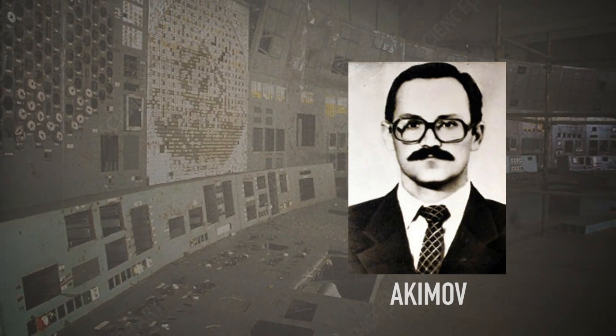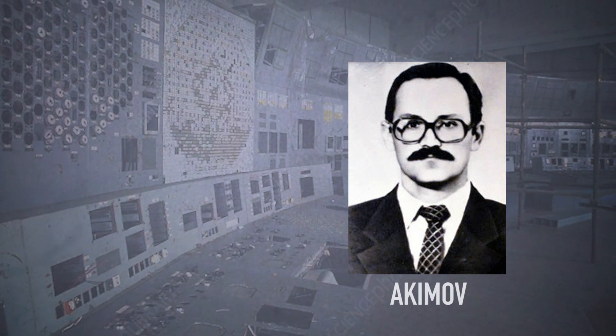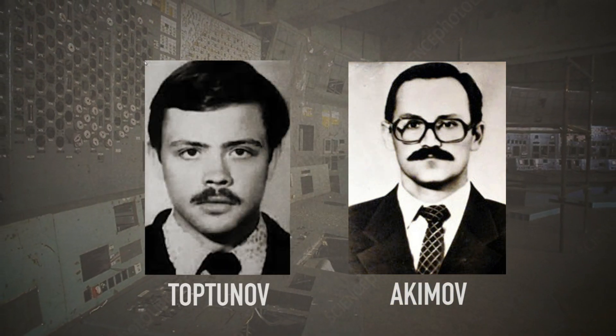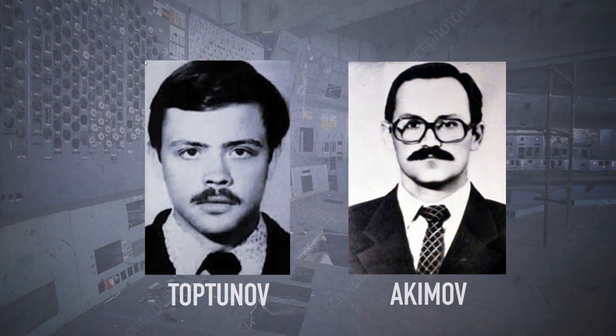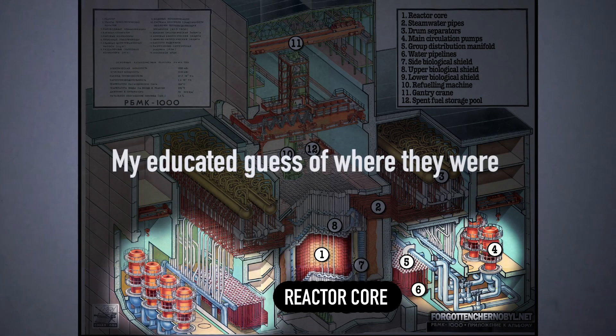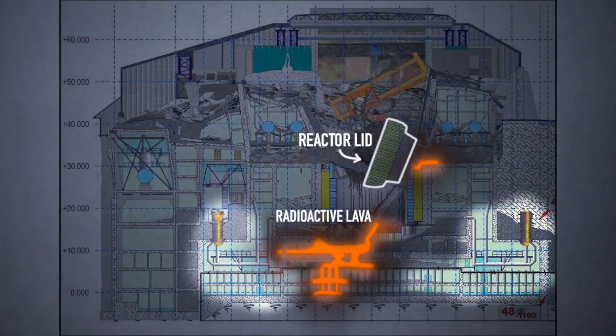At this point, Akimov still thinks the reactor core is intact. Believing that coolant water may be obstructed in a closed valve somewhere in the plant, he and Toptenov, along with a couple other men, make their way into the water room. They spend hours turning valves in an effort to cool a non-existing reactor, while wading through a knee-deep mixture of radioactive fuel and water. As time passes, they begin to feel weak and have trouble turning the valves.